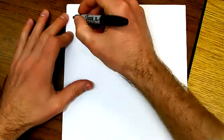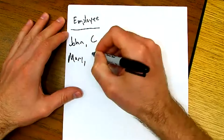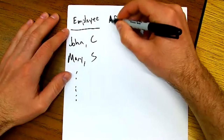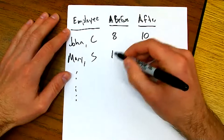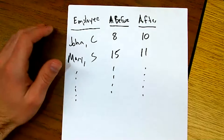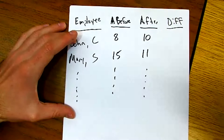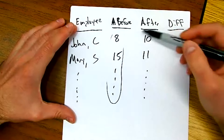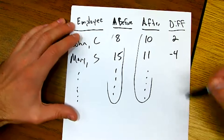So I'm thinking about employees — John, Mary, a bunch of different names. I measure their before and after productivity. Maybe John goes from 8 to 10, this one goes from 15 to 11. I have that measured for every single employee. What I'm going to do is calculate the difference for each employee because it's the same 10 employees. This is why it's not quite like two populations — it's the same 10 people. John went up by two, Mary's productivity went down by four.